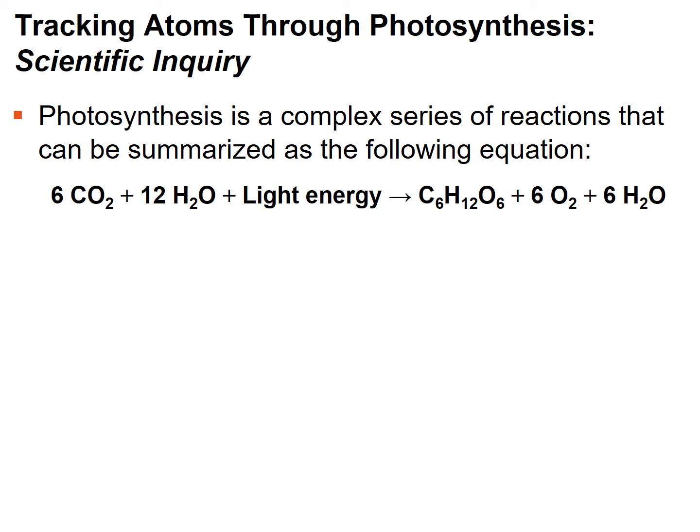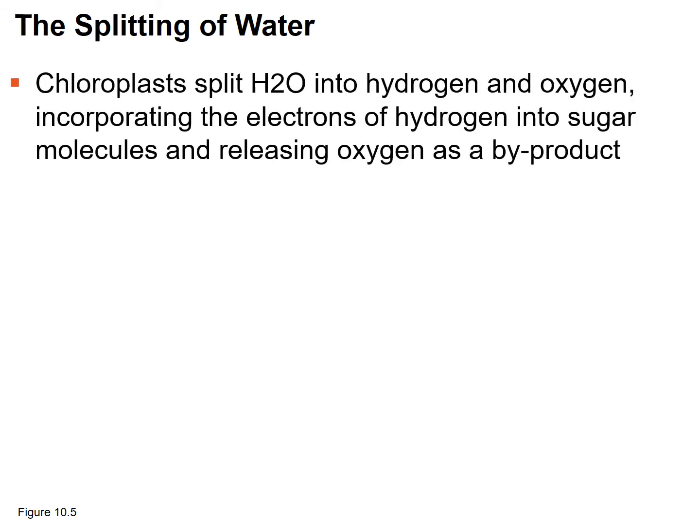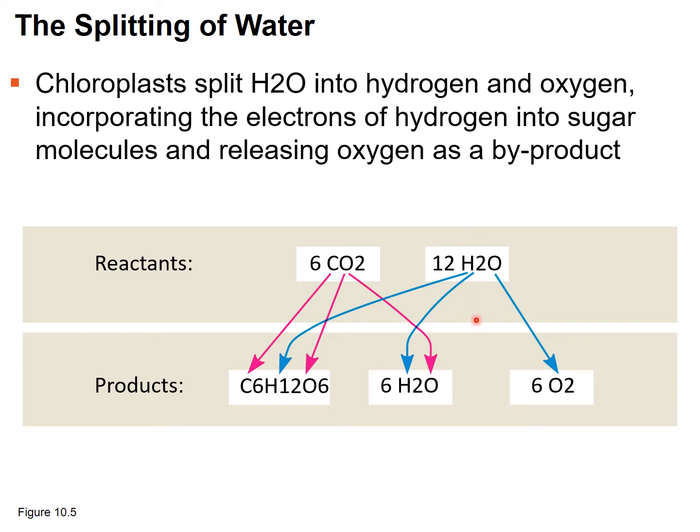To get the process started, chloroplasts split water into hydrogen and oxygen. It's from this splitting of water that oxygen is produced — so we depend on this splitting of water for our oxygen. This releases electrons in the form of hydrogen, which will ultimately combine with other atoms to produce sugar.